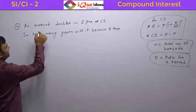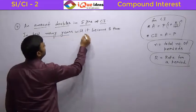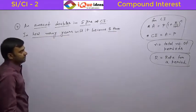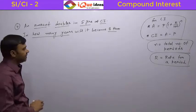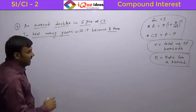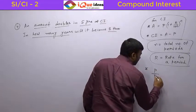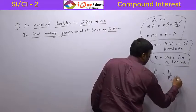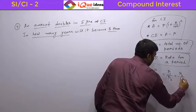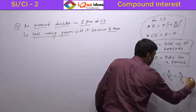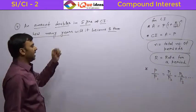Now this question says, an amount doubles in 5 years at compound interest. In how many years will it become 8 times? In compound interest, we have seen that the amounts are in the same ratio if taken at the same gap. So P1 upon P2, P upon P1 is equal to P1 upon P2 is equal to P2 upon P3 and so on and so forth. This thing can be directly applied here.